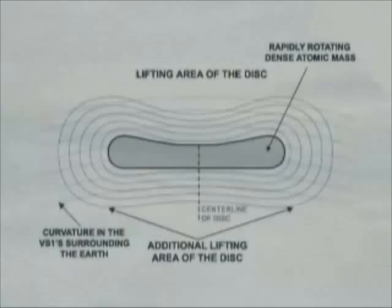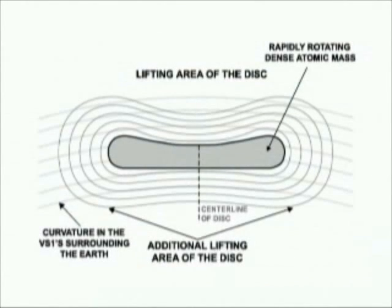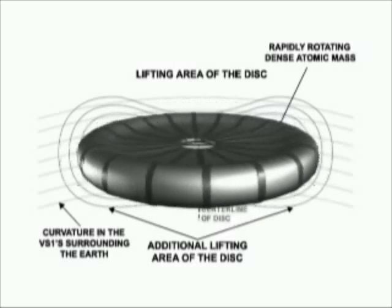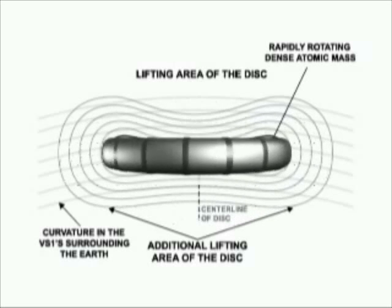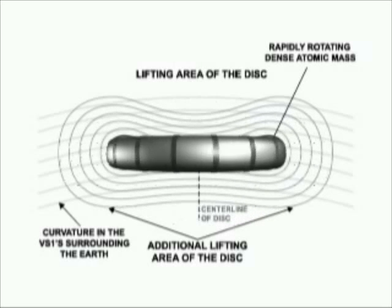This diagram is the key to designing an artificial gravity generator prototype. It shows a rapidly spinning disk of atoms that is displacing Vs1s in the cosmic matrix. When Vs1s are displaced, there are vector lines of force that form around the disk. The intensity of the vector lines of force depends upon the velocity, density, and distribution of atoms inside the rotating disk.